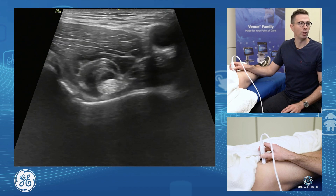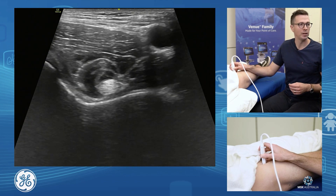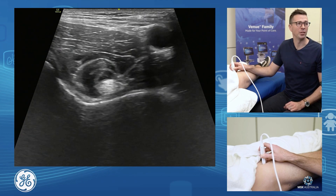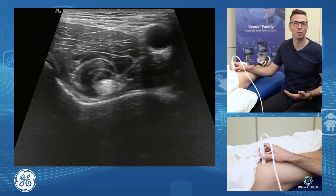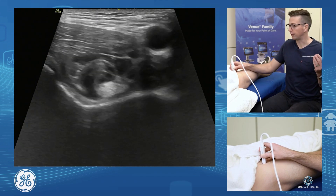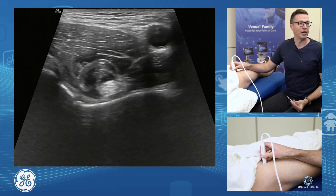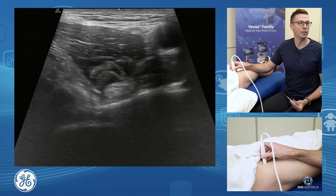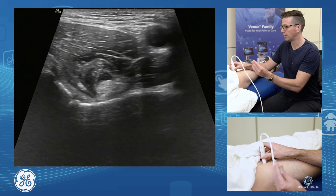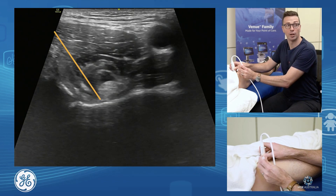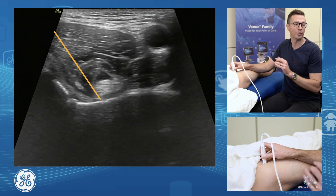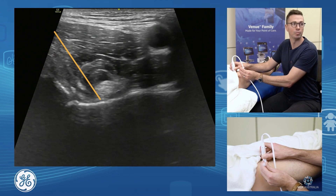This is where we look for iliopsoas bursitis, which is often secondary to hip joint pathology. Remember that the iliopsoas bursa in most cases is contiguous with the hip joint itself — so if you're doing an iliopsoas bursal injection, you're really doing a hip joint injection. For the injection approach: find your iliopsoas tendon at the top, find the femoral head, acetabulum, line yourself up, fix your anisotropy. Bring your needle in at about 45 degrees laterally and slip down to hit the top of the acetabulum, slipping underneath the tendon onto the acetabulum.